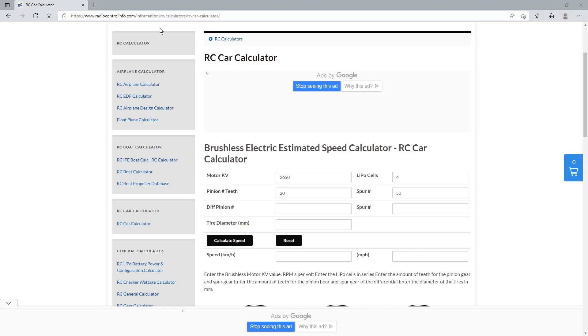We're going to use the RadioControlInfo.com website here to go through our pulley example. Now we're going to go through and enter in the motor KV as well as the lithium polymer cell count. And then we're going to place the values for the pinion gear as well as the spur gear. Those were 20 and 50 if you recall from our example.